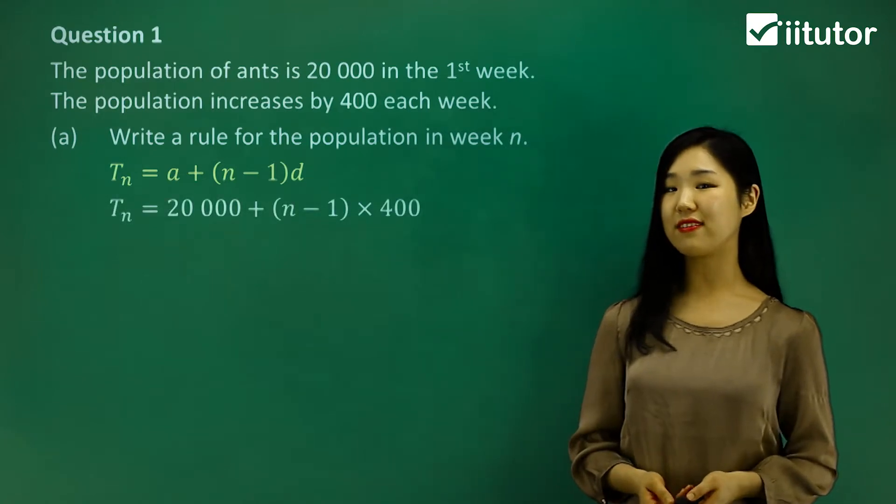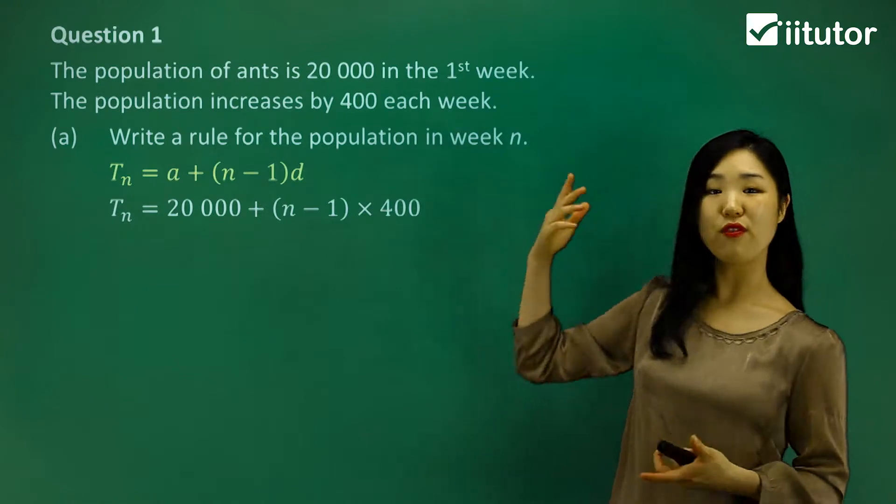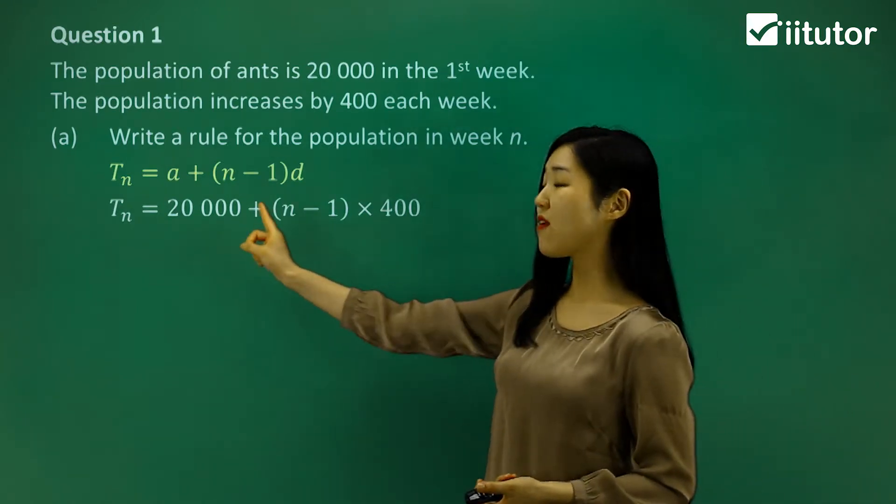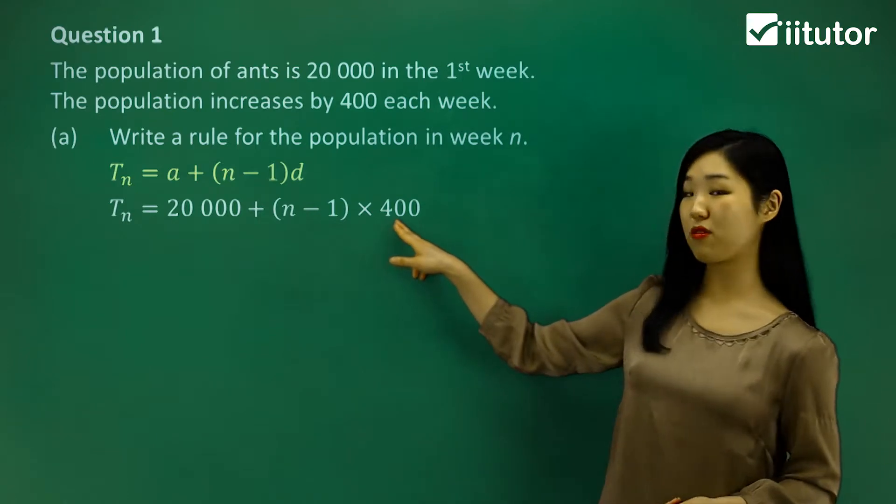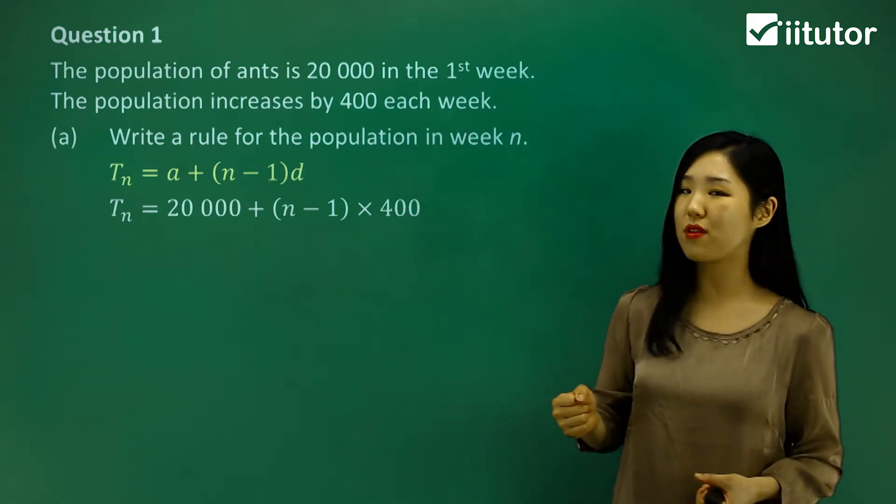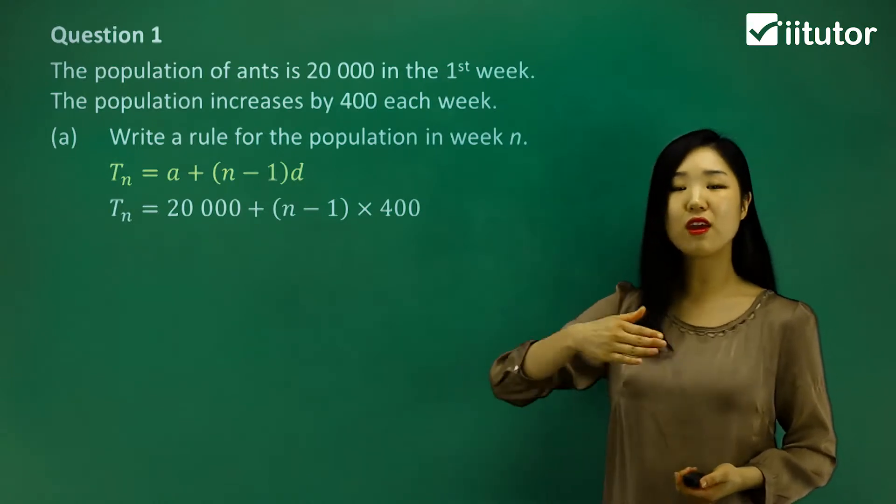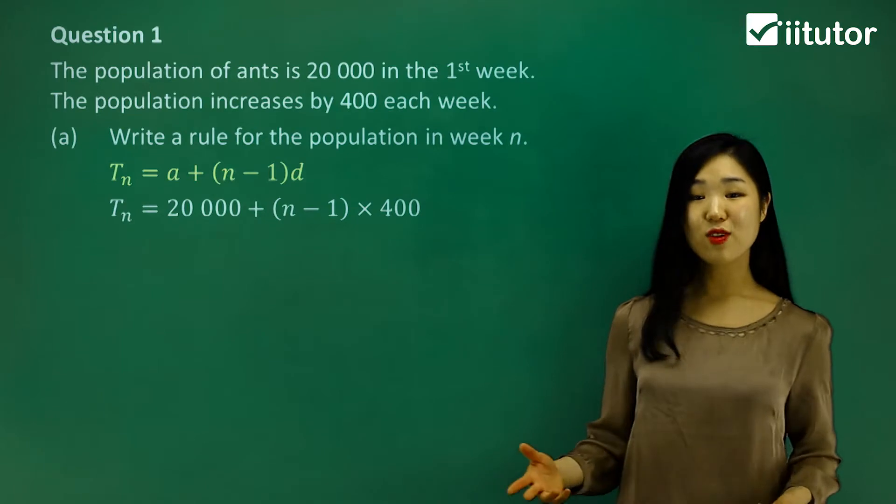The first term is 20,000. It starts with 20,000 in the first week, so that's the first term, a. And see how I replace the d with 400? That's because 400 is the common difference. Every single week, it increases by 400.